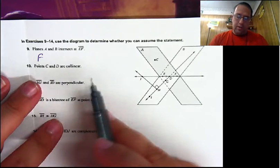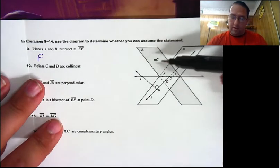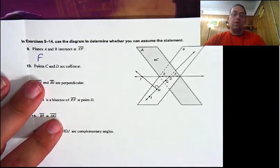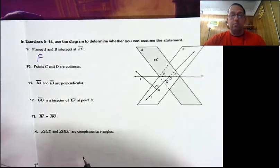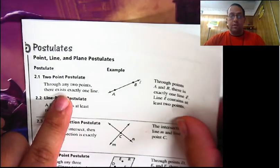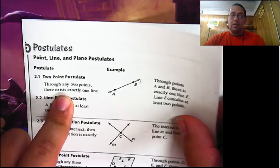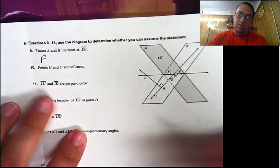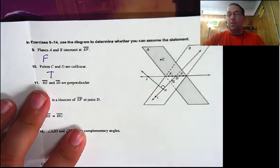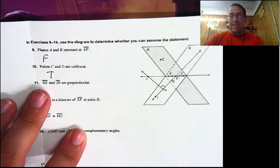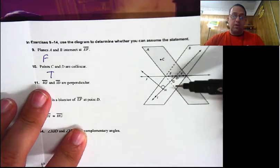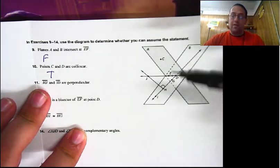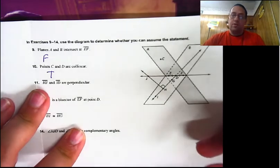Points C and D are collinear. We have C right there, D down there. Can we assume those two points are collinear? I don't see a line going through them. However, that very first postulate said two points determine exactly one line — any two points, whether there's a line drawn or not. So this is going to be a true statement. Now, if it had been three points, like C, E, and G — those might look collinear, but with three points you have to have that line drawn through them. With two points, it's always going to be there.